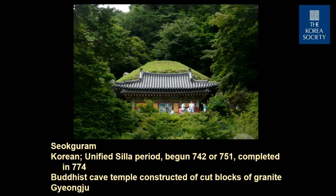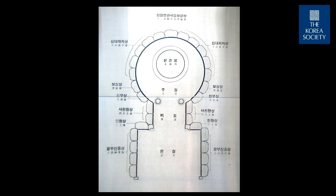Sakuram is modeled after cave temples in China and ultimately in India. The big difference is that cave temples in China and India were carved into the living rock — into cliffs of either sandstone or limestone, which are relatively soft stones. There are no hills of that type in Korea. Korea just seems to be solid granite, and it would be impossible to carve a cave temple into a hillside of granite. Therefore, what really differentiates Sakuram as a cave temple is that it is a temple imitating a cave temple, but made of cut blocks of granite.